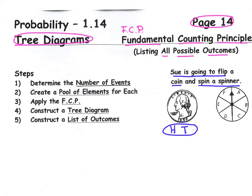And for our spinner, we can clearly see all of our outcomes, but I'd like you to make it a habit of drawing your pool of elements. You could spin an A, a B, a C, a D, an E, or an F. So we have basically two events. The first event is the flipping of the coin, and the second event is the spinning of the spinner.